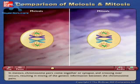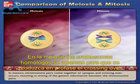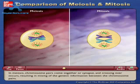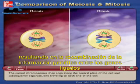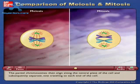In meiosis, chromosome pairs come together, or synapse, and crossing over occurs, resulting in mixing of the genetic information between the chromosome pairs. The paired chromosomes then align along the central plate of the cell.